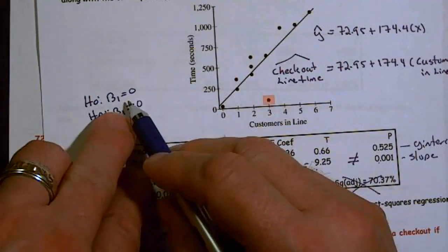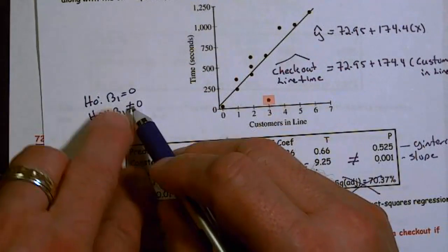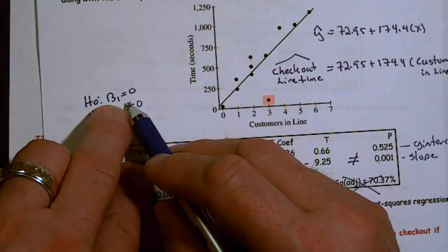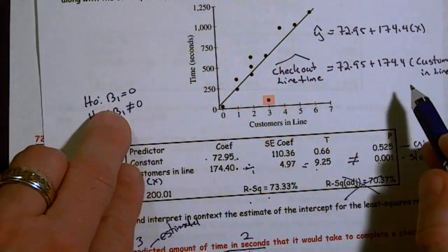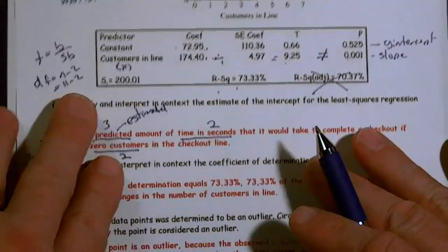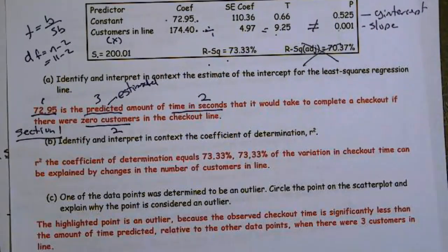And you can't just say there is not a linear relationship. You would have to say there is not a linear relationship between the amount of time in the checkout line and the number of customers. So make sure you have it in full context, if they were to ask those questions. But they didn't here.